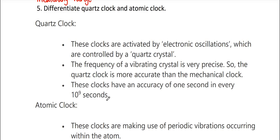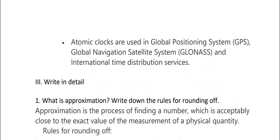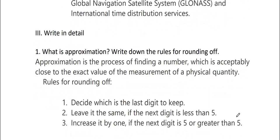So atomic clock pathinga na, these clocks are making use of periodic vibrations occurring within the atom. These clocks have an accuracy of 1 second in every 10 to the power 6 baron seconds. Atomic clocks are used in global positioning system, GPS leaves panro, a global navigation satellite system and international time distribution services.